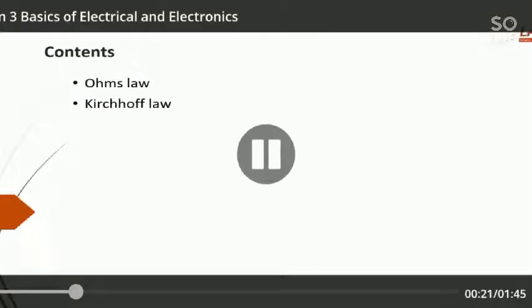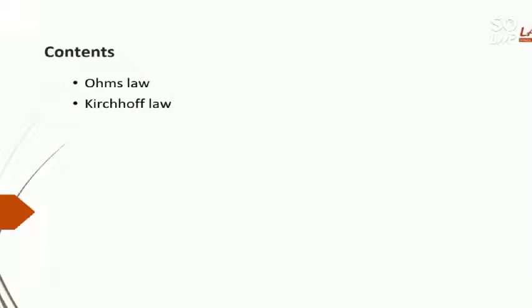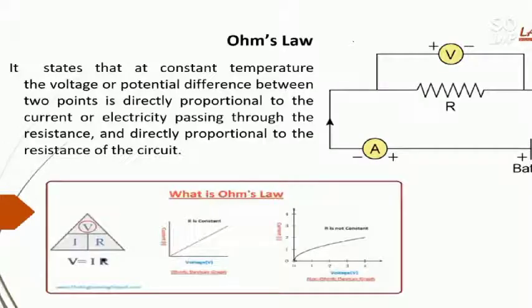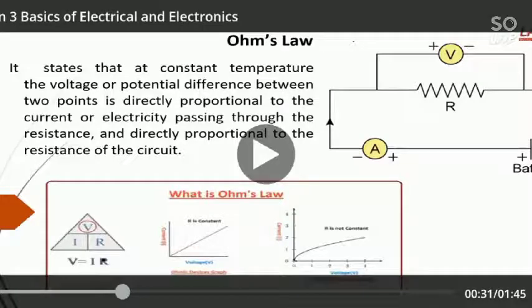In Ohm's law, basically it determines the relationship between voltage and current. Voltage is measured in volts and current is measured in amperes.